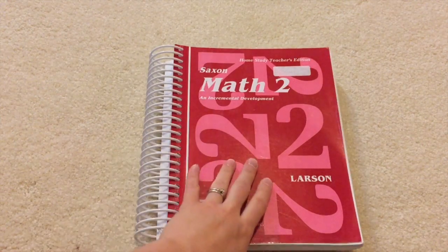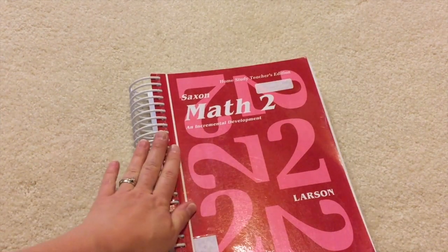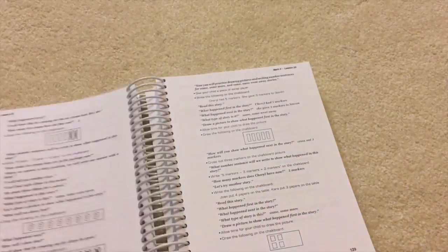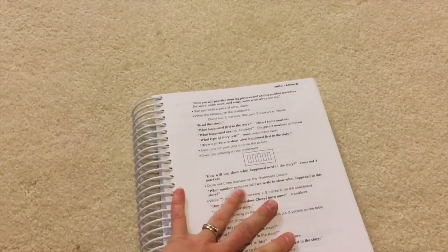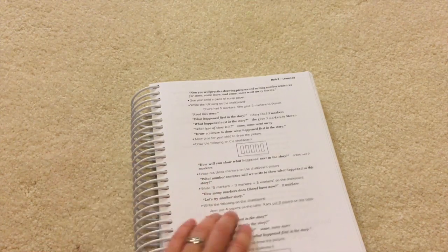And then we have our teacher's edition. It's a big old thick spiral bound book. I appreciate spiral binding because I can keep it turned to whatever page we are on and not have to use bookmarks or lose little page flags or any of that mess.